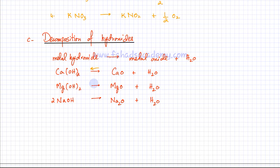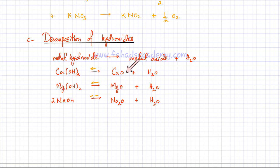Similarly, magnesium oxide in water forms magnesium hydroxide, and sodium oxide in water forms sodium hydroxide. So, heating a metal hydroxide decomposes it to an oxide, and adding water to the oxide produces the hydroxide back again — it's a very easily reversible reaction.